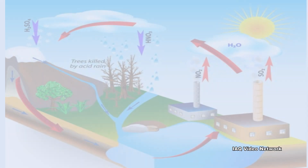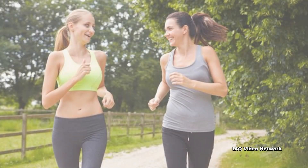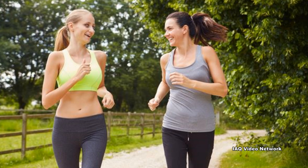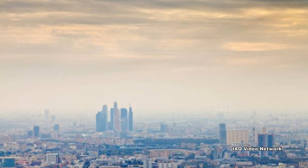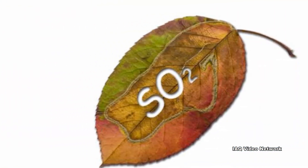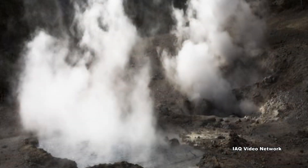Sulfur dioxide and nitrogen oxides can react with precipitation, oxygen, and other substances in the atmosphere to form acid rain. People can be exposed to sulfur dioxide outdoors by breathing polluted air, more likely in the summer when sun and hot temperatures react with pollution to form smog. Natural sources such as plant decay and volcanoes can also expose people to this gas.